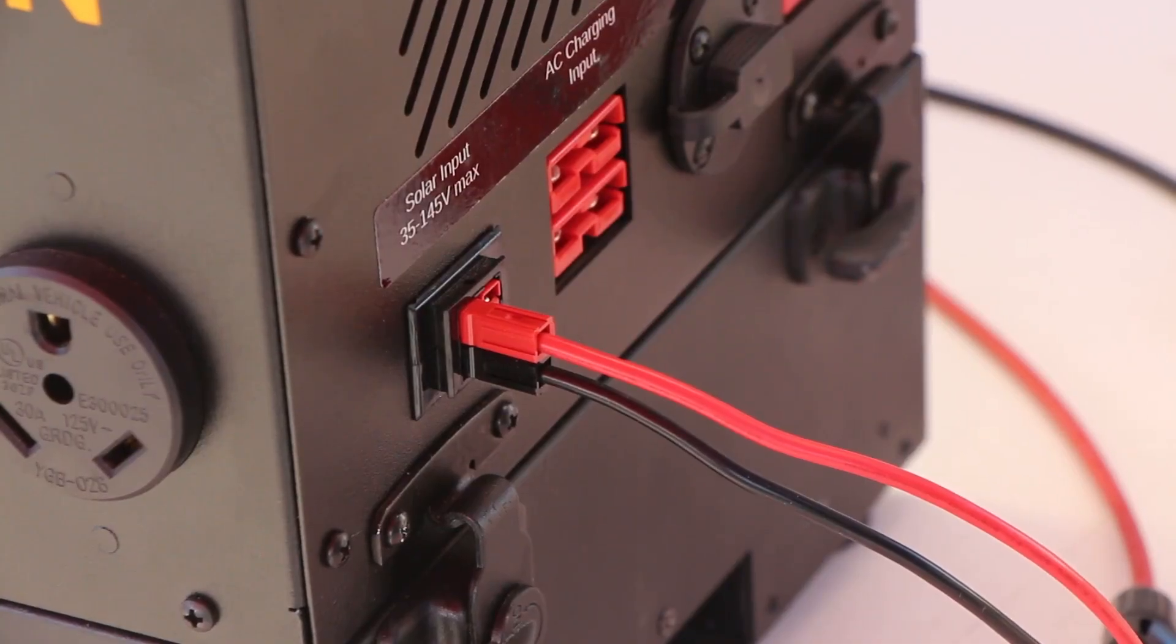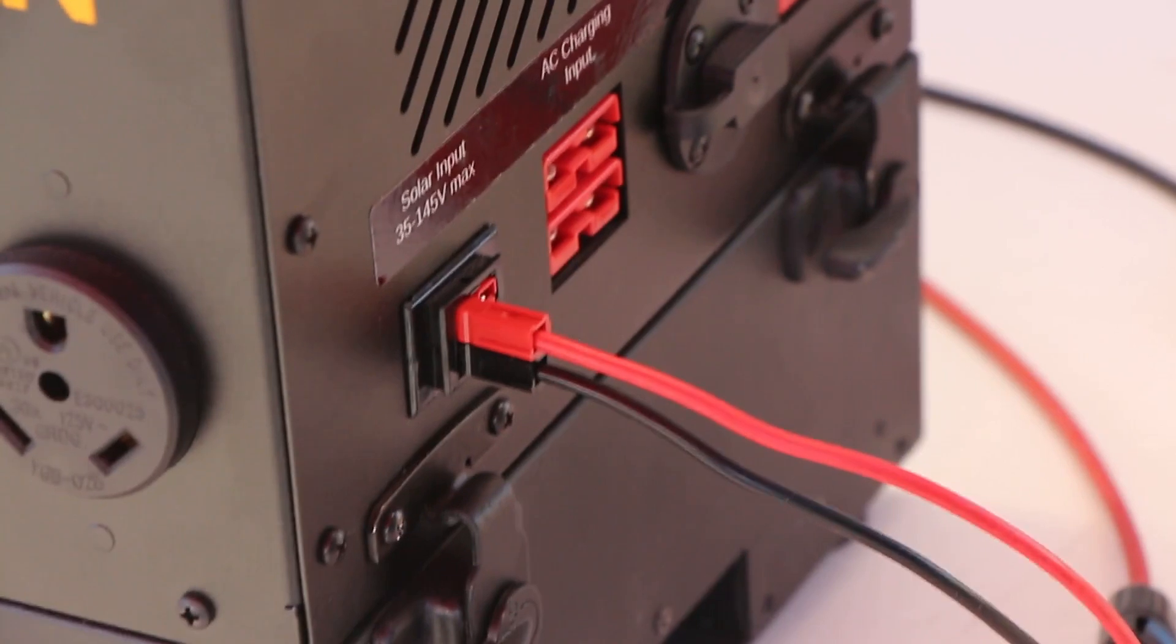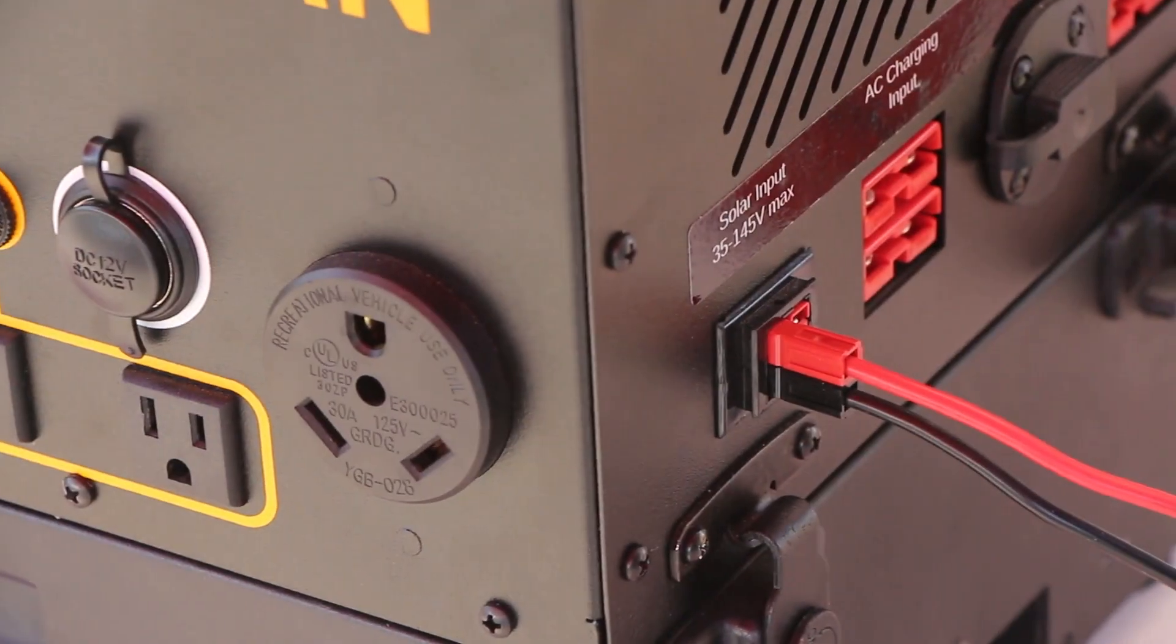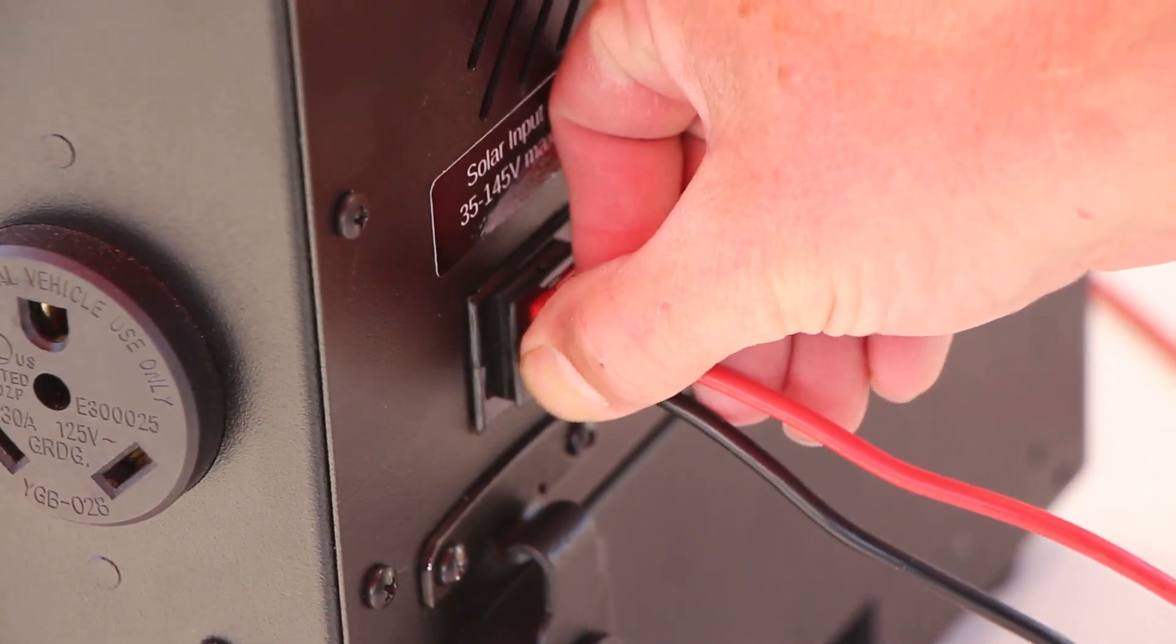Now we're going to see why we're not putting in the 200 watts that we should. We're only putting in 55 watts instead of 200. To do that we need to check the voltage, which we already did, but we'll check it again.